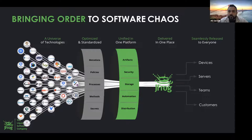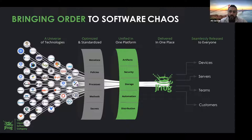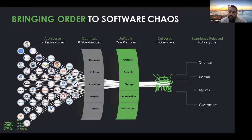That's where JFrog essentially comes in. It provides support for a very large set of technologies, languages, and packages to unblock developers. It includes standardized processes around metadata collection, policy-driven mechanisms, and secrets, with functional capabilities from artifact management to security, CI/CD pipeline automation, and software distribution — all delivered in one unified, universal end-to-end DevOps solution.